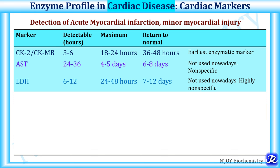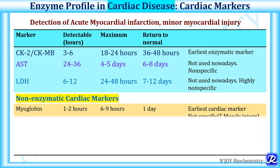There are some non-enzymatic cardiac markers like myoglobin, which is detectable within 1-2 hours of myocardial injury. It reaches its maximum level by 6-9 hours and returns to normal by 1 day. It is the earliest cardiac marker. So if the question is about the earliest cardiac marker to rise in myocardial infarction, the answer is myoglobin. But if the question is the earliest enzymatic cardiac marker, then the answer is CK-MB. Myoglobin is not specific — it is also increased in muscle injury.